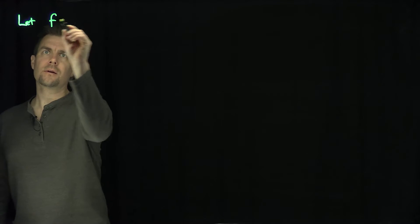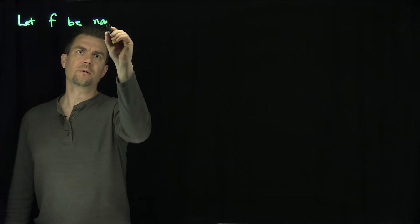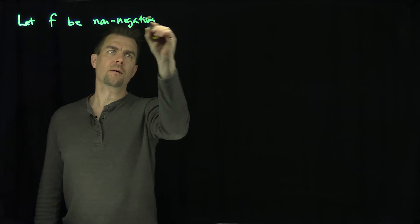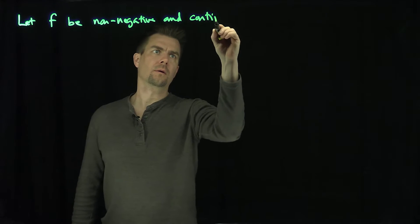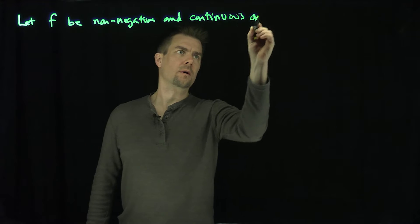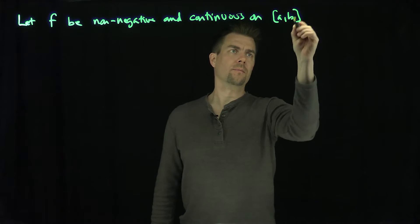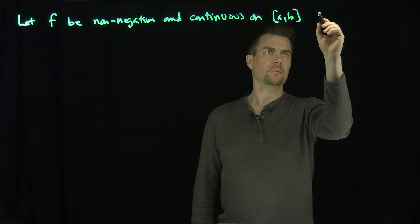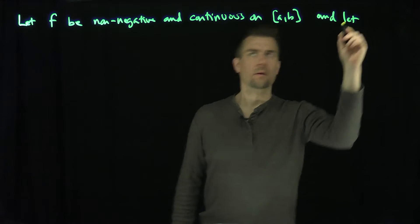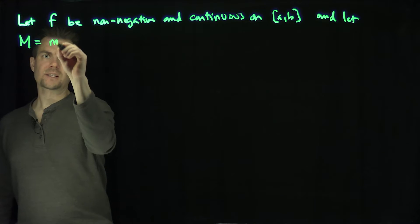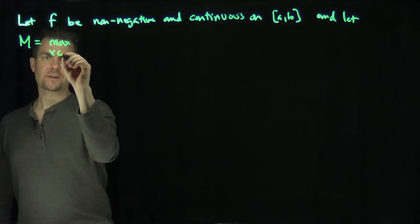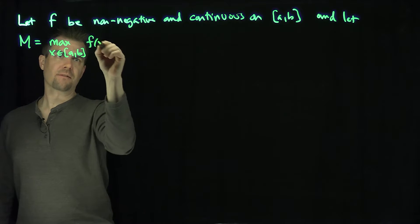Hello students. In this video we'll show that for a non-negative continuous function that achieves its maximum value on a closed interval, the Lp norms converge to the L infinity norm. Let F be non-negative and continuous on the interval [a, b], and let M be the maximum for x in [a, b] of the function f(x).